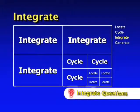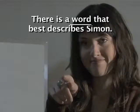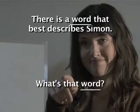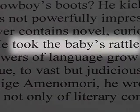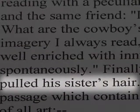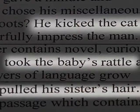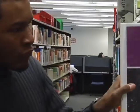Let's take a look at integrate — this is where we really start pushing questions to the front of the brain. "What word best describes Simon?" The given: there is a word that best describes Simon. The requested: what is that word? We look at the document: kicked the cat, took the baby's rattle, pulled his sister's hair. Nowhere in the story is a word given, but putting those three pieces of information together, we come up with: Simon is mean. That's an integrate.